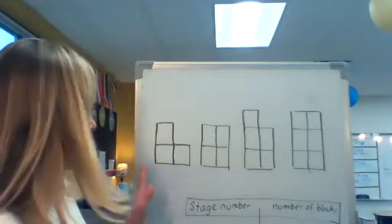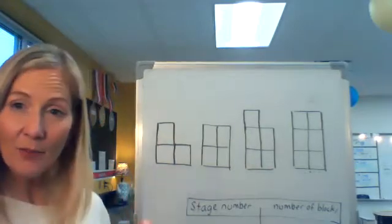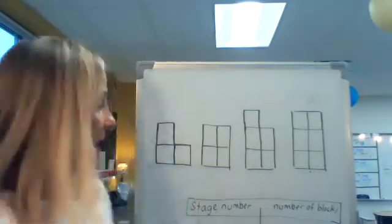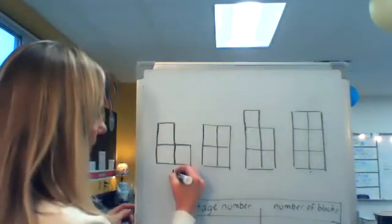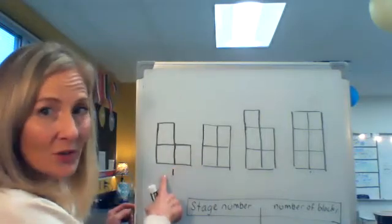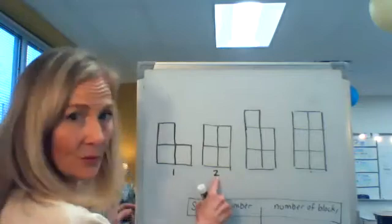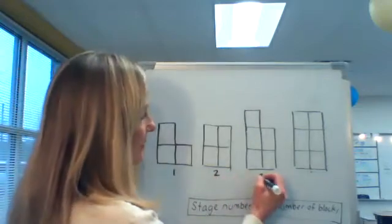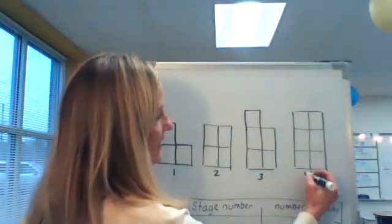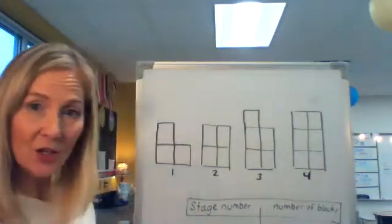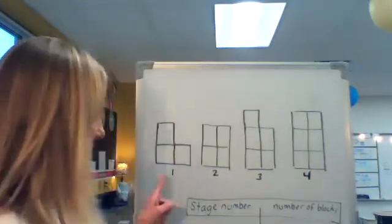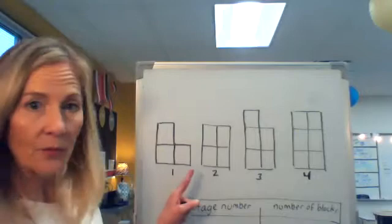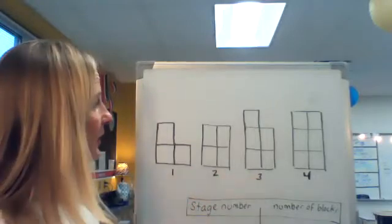I always like to start with labeling my stage numbers or my step numbers. Sometimes people call that step one or stage one, step two or stage two, step three or stage three. They've given us four stages or four steps. This would be stage number one, stage number two, stage number three.